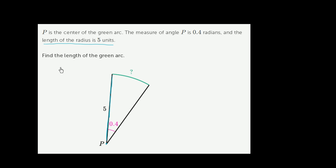Just to conceptualize this a little bit, P is the center of this larger circle. And this angle right over here that has a measure of 0.4 radians intercepts this green arc right over here.